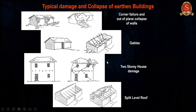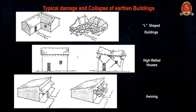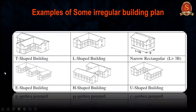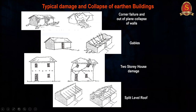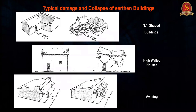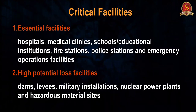Certain building shapes are seismically vulnerable — T-shape, L-shape, narrow buildings where length is greater than 3 times the width, E-shape, and H-shape buildings tend to have corner failures. For new construction, avoid these irregular shapes. For existing irregular buildings, further detailed analysis can be pursued.